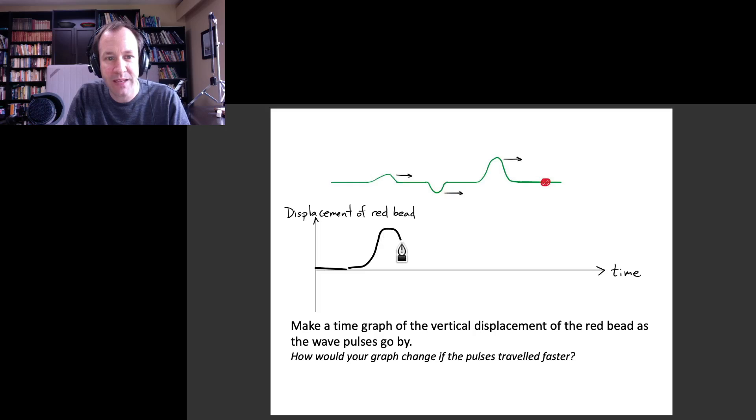It will come back down as this passes by. Then when that second pulse comes to it, it will go downward and then it'll go back up. Eventually that third pulse will reach it and it'll go up and then it'll go down.